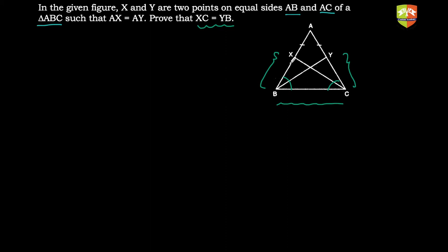Now, how to prove that XB equals YC? It is true because AB equals AC is given, and AX equals AY are also given. So clearly XB and YC will also be equal. Hence I think we are done with the approach, so let's write it formally.